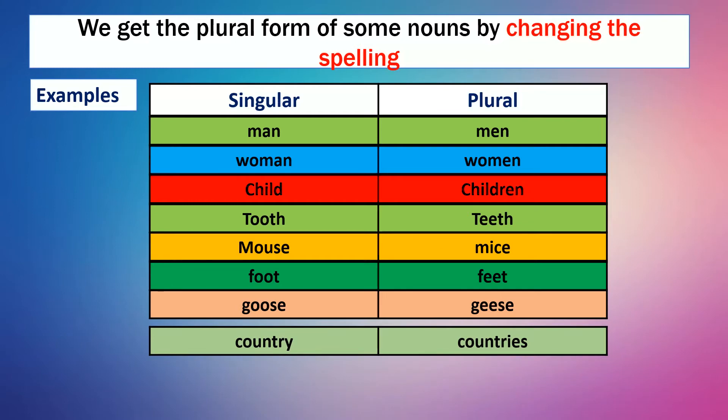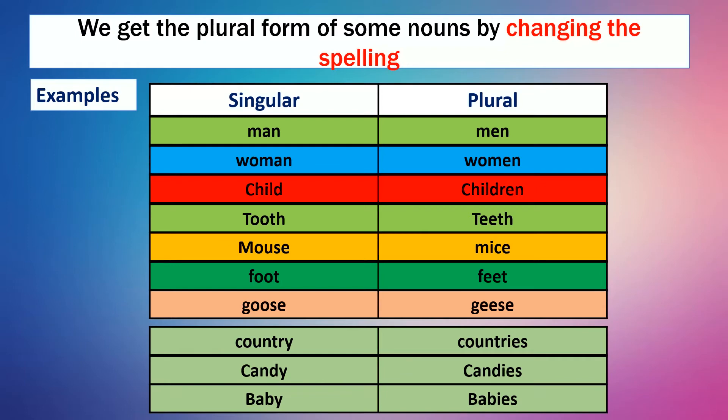Country, countries; candy, candies; baby, babies. We can see that the Y is replaced by IES to get the plural form.